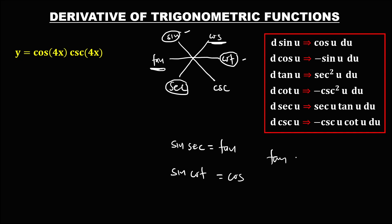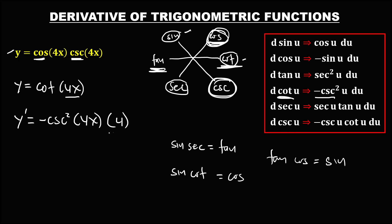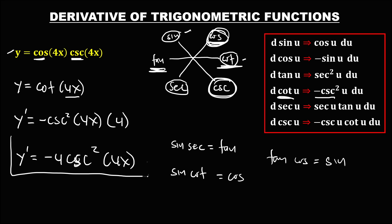For example, tangent times cosine — the result is the middle function, which is sine. So for this given: cosine times cosecant. The middle function is cotangent, so these functions equal cotangent(4x). We can now find the derivative: y prime equals the derivative of cotangent, which is negative cosecant squared of 4x, times the derivative of 4x, which is 4. So y prime equals negative 4 cosecant squared(4x). This is now the derivative.